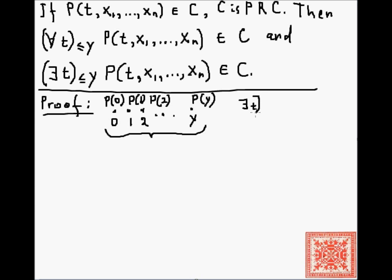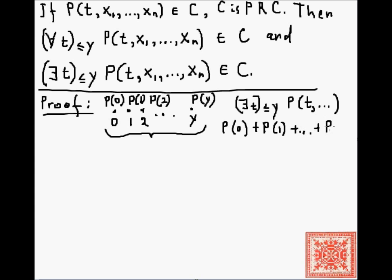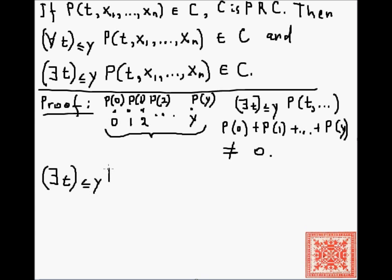Now let's consider the existentially bounded version of this predicate: there exists t ≤ y for which P(t, x1,...,xn) is true. This is true if and only if the sum of individual P values — at 0, 1, ..., y — is not equal to 0, or equivalently, is greater than 0. Since we are summing over natural numbers, not equal to 0 means it is at least 1. So we can define the existentially bounded predicate in terms of summation.